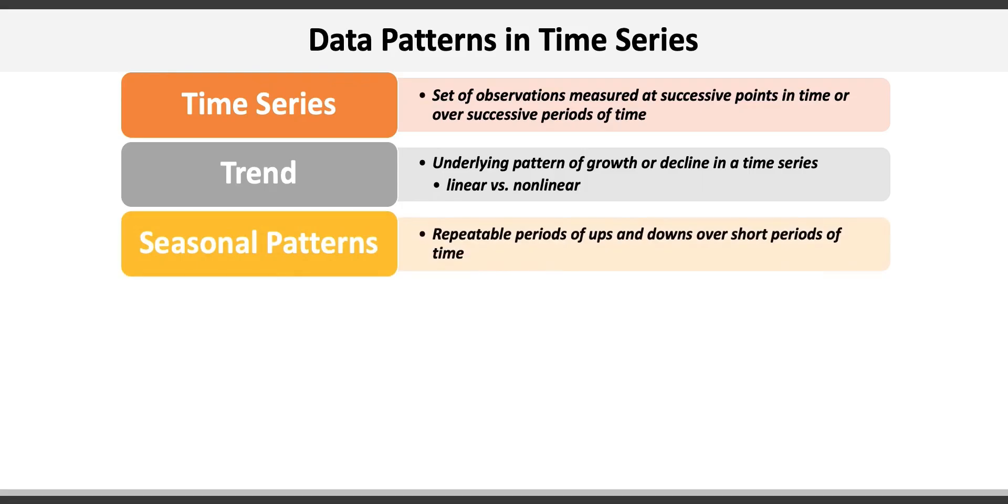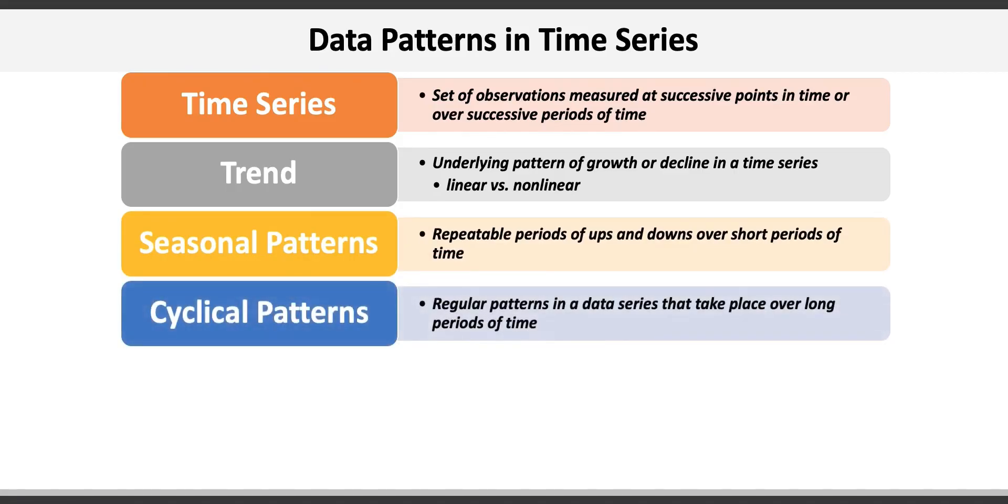Seasonal patterns are repeatable time periods of ups and downs over short periods of time. Retail sales typically follow repeatable seasons over a year. Cyclical patterns in a data series are those that take place over long periods of time. Cyclical patterns may mimic the economic cycle for example.